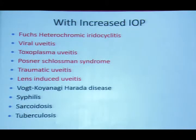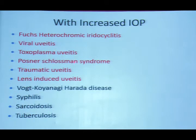Uveitis is usually associated with a decrease in intraocular pressure due to temporary ciliary body shutdown. However, certain conditions in uveitis are associated with increased intraocular pressure, including Fuchs', viral, toxoplasma, Posner-Schlossman, traumatic, lens-induced, and conditions like Behcet's, syphilis, sarcoid, and TB.